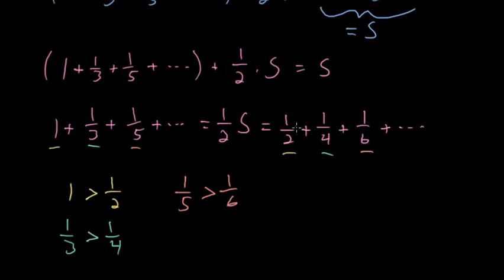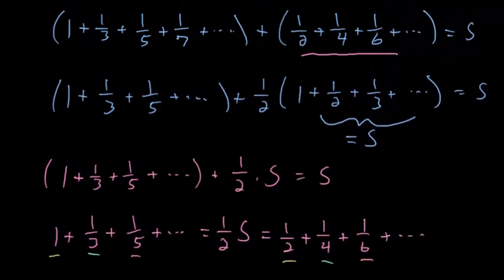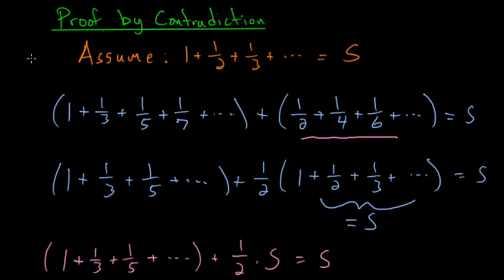So comparing term by term the terms on the left side are always bigger than the terms on the right side. So therefore these two sums can't be equal to each other and that's where the contradiction comes from. Since this doesn't make any sense we can conclude that this initial assumption here must be wrong. And since this is wrong that all of the terms in the harmonic series add up to some finite number we have to conclude that the sum of this diverges.